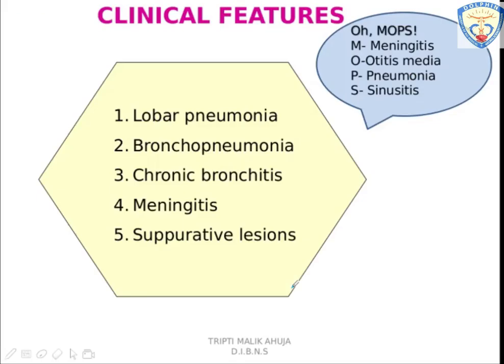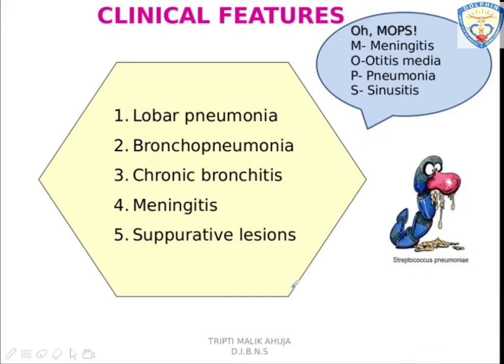MOPS stands for meningitis, otitis media, pneumonia, and sinusitis. Lobar pneumonia, bronchopneumonia, and chronic bronchitis are the diseases present in the lungs. Lobar pneumonia occurs when either of the lobes is infected. Bronchopneumonia presents as diffuse patches of pneumonia. Chronic bronchitis involves infiltration where the air pathways get clogged. These occur mostly in debilitated patients.